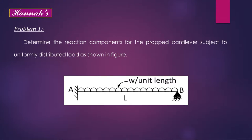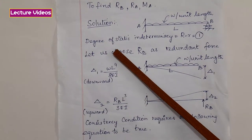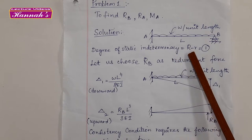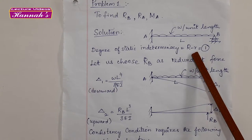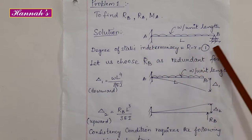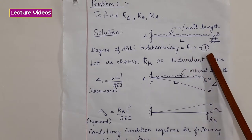This is a propped cantilever beam carrying uniformly distributed load of intensity W per unit length. We are asked to determine the reaction components RA, RB, and MA. Since there is no horizontal loading, HA is 0. First step: calculation of degree of static indeterminacy. Degree of static indeterminacy is determined as capital R minus small r, where small r is the number of available static equilibrium equations. Here we have a fixed support with three reactions and a roller with one reaction, giving capital R equal to 4. Small r equals 3, so the degree of static indeterminacy is 1.